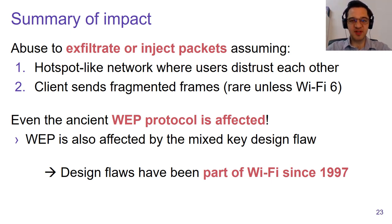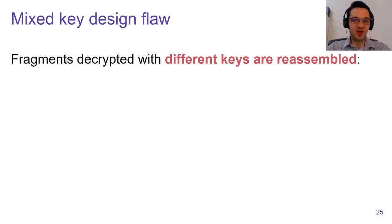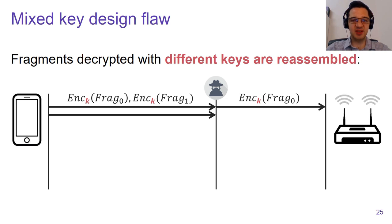Let me move on to the third design flaw, which I call the mixed key attack. The root cause is that fragments decrypted under different keys are still reassembled by the receiver. We assume the victim sends a frame encrypted using the current session key K, split into two fragments. The adversary forwards only the first fragment to the access point and blocks the second fragment.